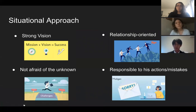In regards to the situational analysis, based on our research, we believe that Jack Ma matches the business situation. He has a strong vision and the courage to challenge the unknown, and these traits make him able to lead an organization such as Alibaba. Also, he's not afraid of admitting mistakes — he and his team can learn and grow from them. Jack Ma is relationship-oriented, which makes him care about his employees, and he focuses a lot on building good relationships with them.